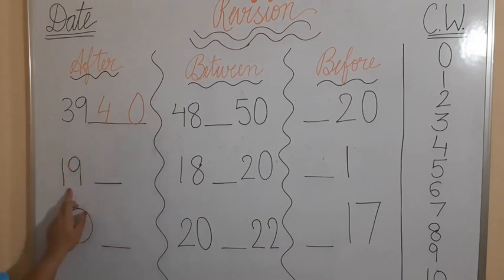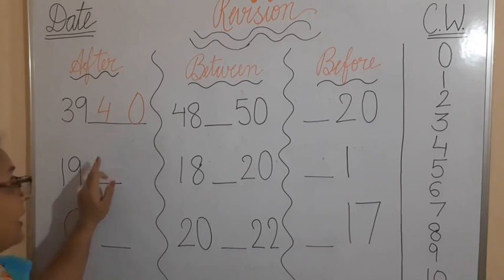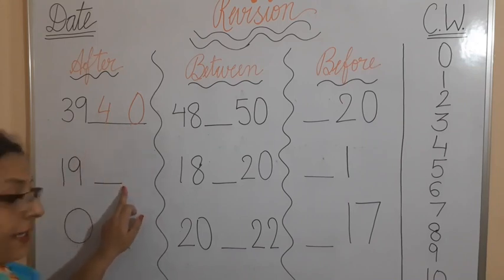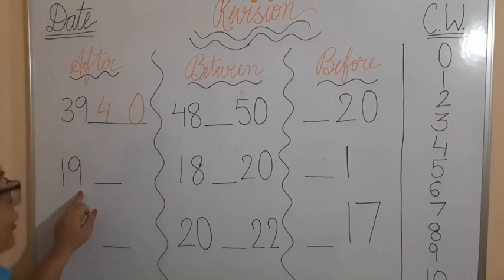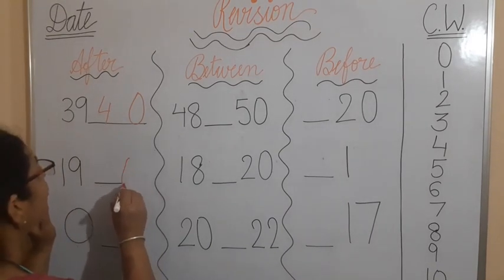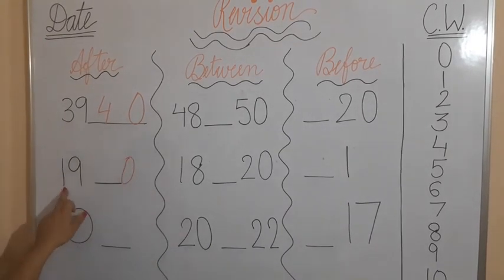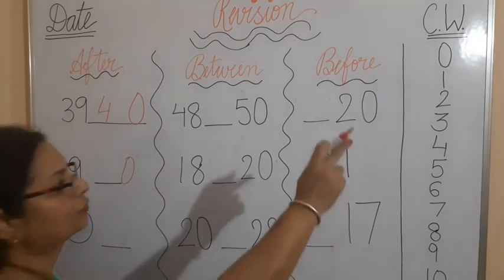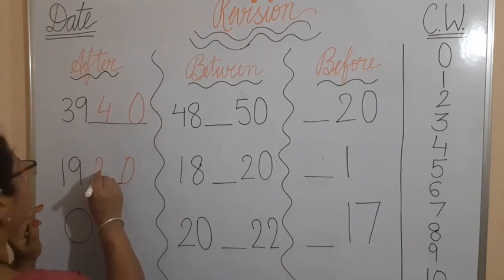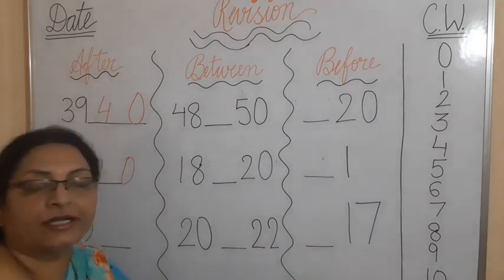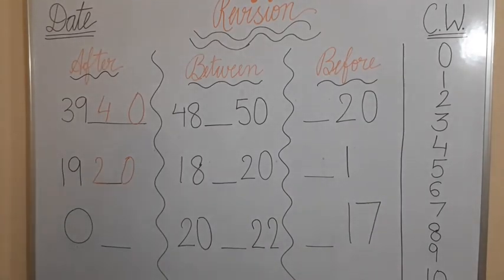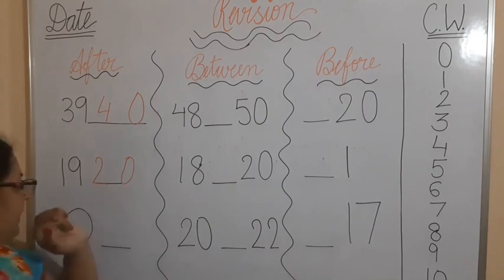Do you see the second digit? 1, 9, 19. So what will you do here? The same procedure you will follow here. In place of 9, you have to write 0. The first digit is 1. What comes after 1? 2. So you have to write 2 here. So 20 comes after 19.